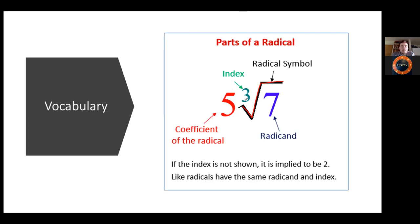Last but not least, we have the index. In this case it's a cube root, so there's a 3. But in a square root, 99 times out of 100, there is no 2 written — there's an imaginary 2. It's always blank, so you just see the radical symbol. This is similar to exponents — if you have x to the power of nothing, there's an implied 1. Here, if there's nothing, there's an implied 2, meaning square root.